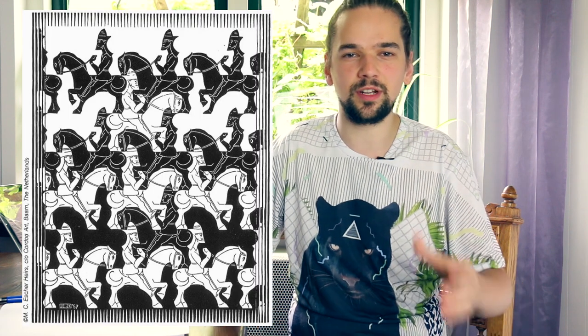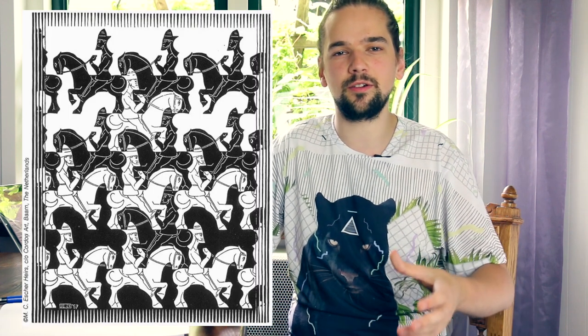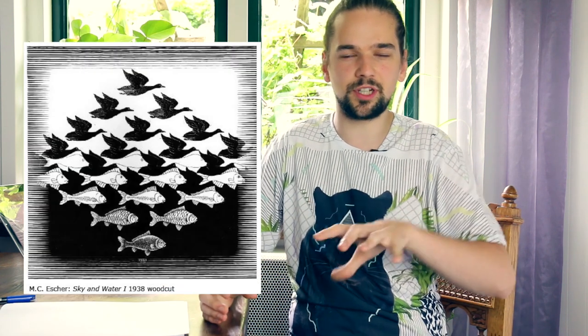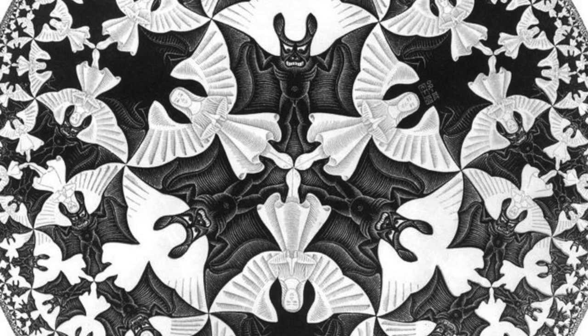In the case of a figure-ground illusion, your brain cannot really decide which is the object and which is the background. So in this image, for instance, you can see two faces — or a vase, depending on how you look at it. M.C. Escher used this kind of illusion a lot, and oftentimes you can see two different shapes but you cannot see them both at the same time; you have to switch back and forth to see one or the other.